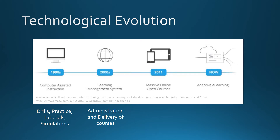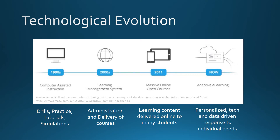In the early 2000s, learning management systems were implemented to administer and deliver educational opportunities through a secure, centralized system. Massive online open courses gained popularity in 2011 by delivering learning content online to individuals anywhere, anytime. Today, adaptive e-learning technologies, largely driven by corporations and developers, provide a personalized technology and data-driven approach that responds and adapts to the individual learners' needs.